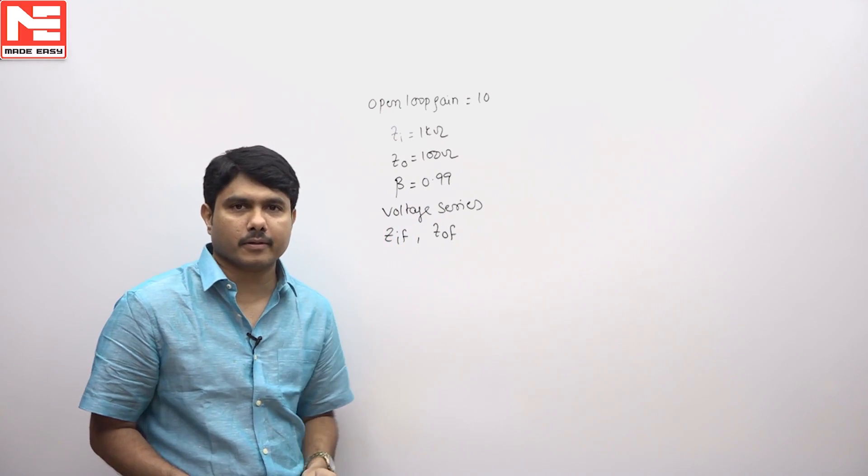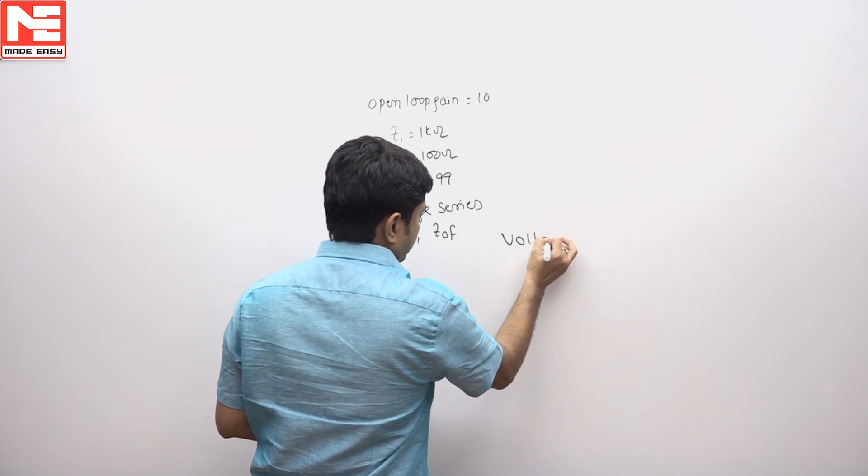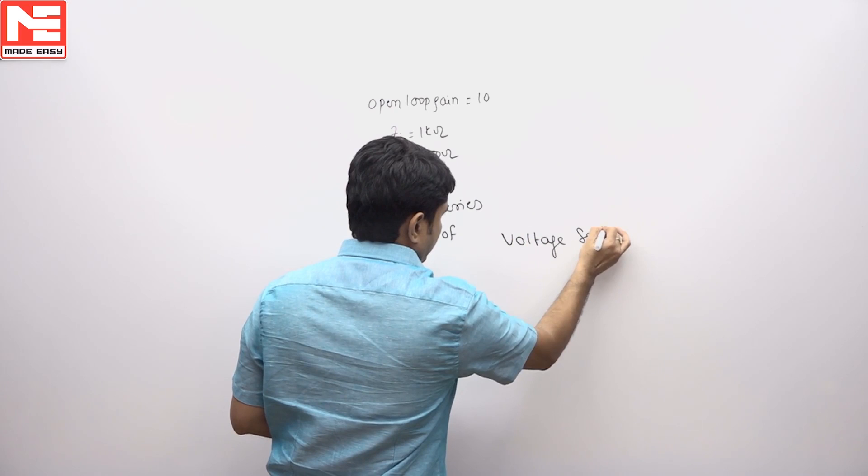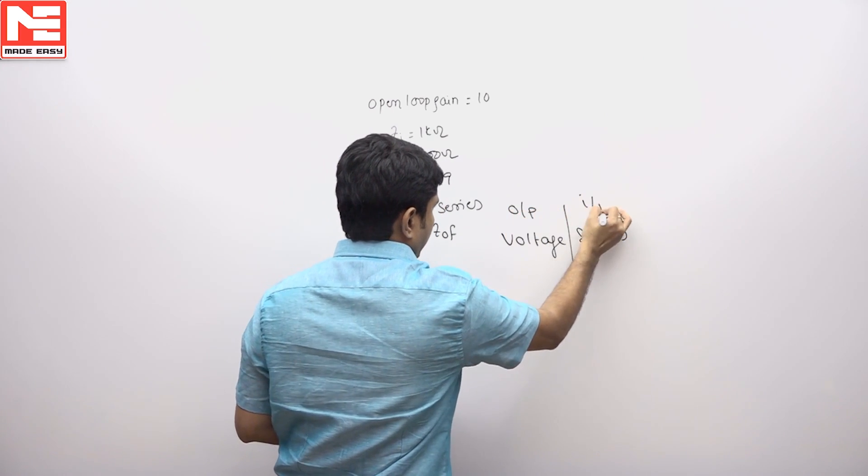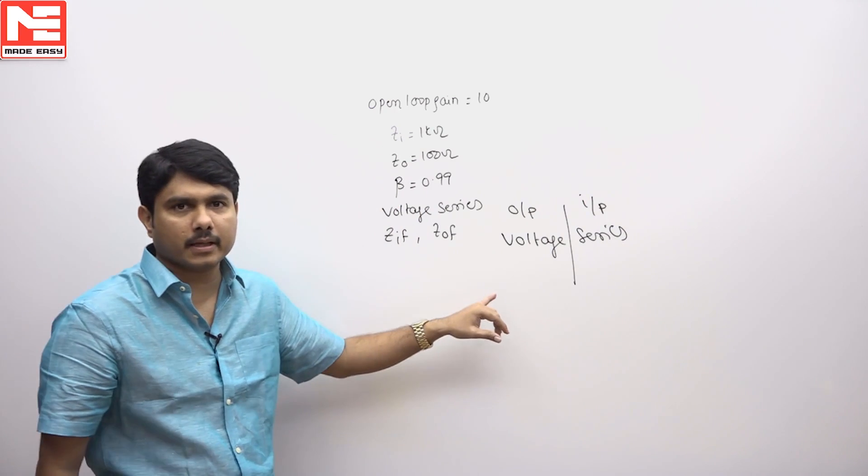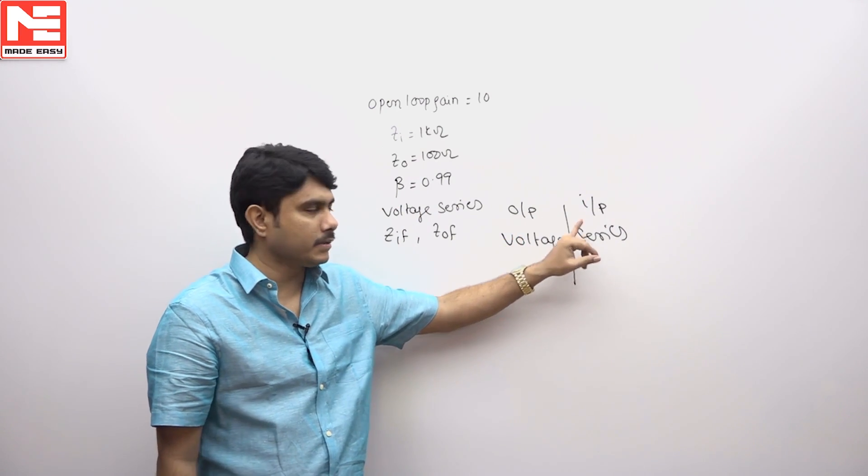What are ZIF and Z0F? If you consider voltage series topology, this is the output sample and this is the input connection. In this topology, voltage means output and series means input.